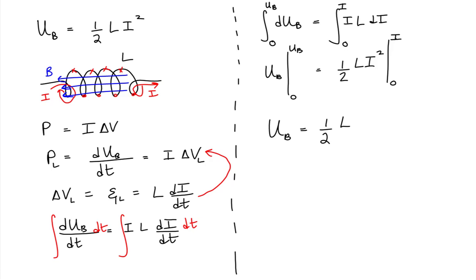When we plug in our limits of integration, we get our expression for the magnetic potential energy stored by an inductor being equal to one-half the product of the inductance and the square of the current running through the inductor.